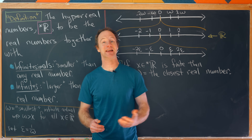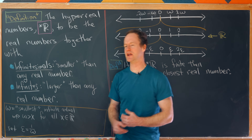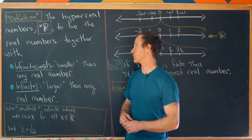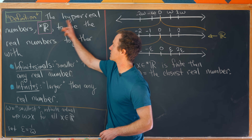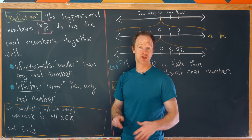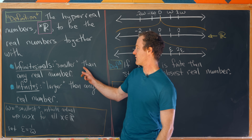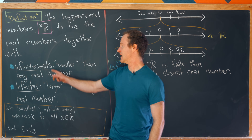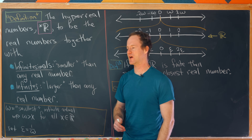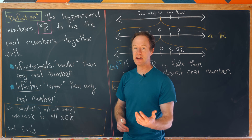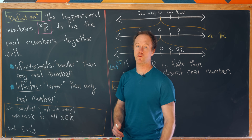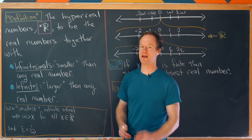Let's look at the definition of the hyperreal numbers — in quotes, because this is not as careful as something you might see in a textbook, but it will give you an idea for what's going on. The hyperreal numbers, denoted by star R, are the real numbers together with two other types of objects. The first type are infinitesimals, which are smaller than any real number in absolute value. So if you have any positive real number x, we can find infinitesimals between zero and x.